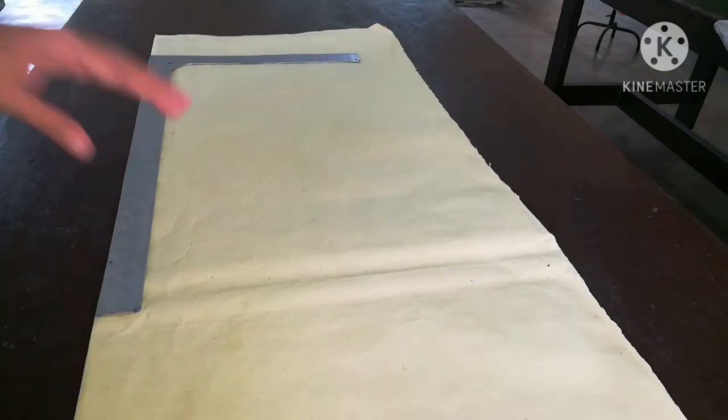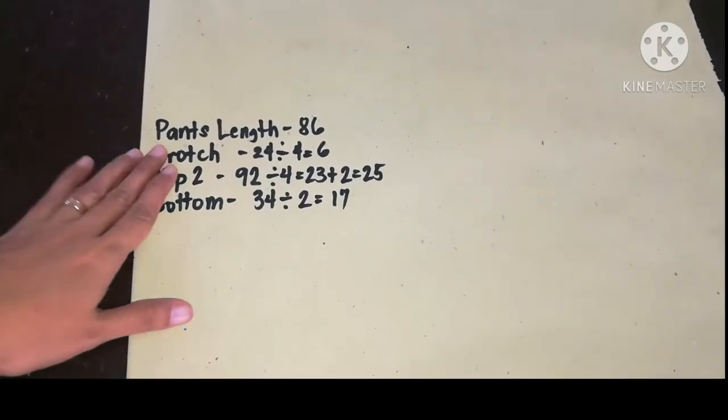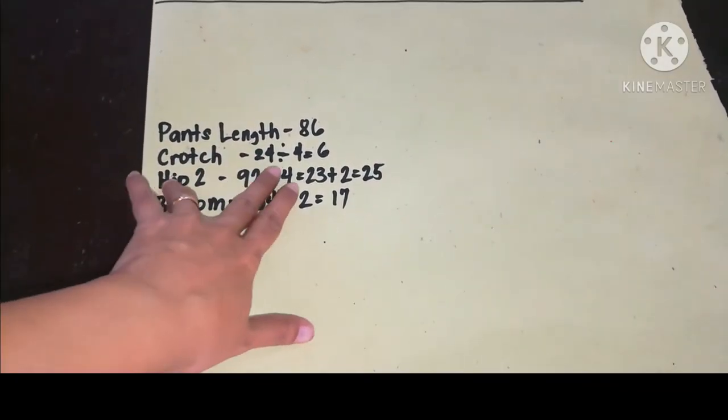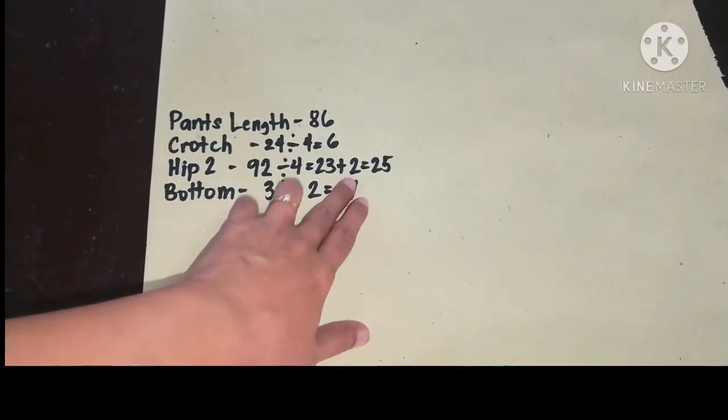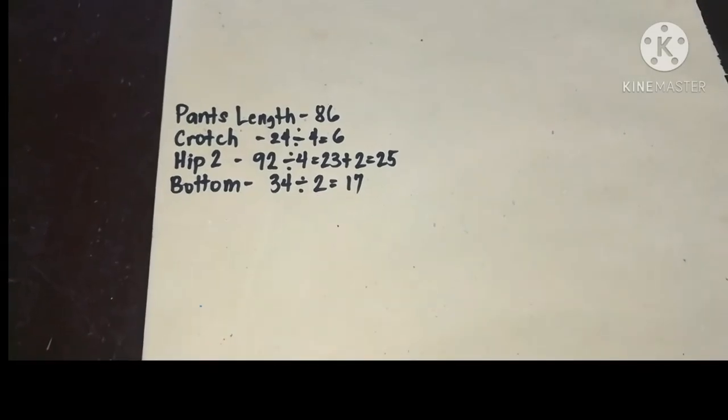And then list down the measurements needed: pants length, crotch divide by 4, hip 2 divide by 4 plus 2 cm, and the bottom divide by 2.